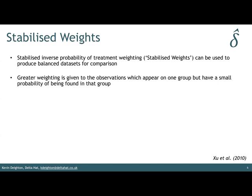The idea with stabilized weights is that greater weighting is given to observations which appear in one group that have a small probability of being found in that group. It's effectively taking the patients in the sample that are less well represented and increasing their weight — almost increasing the sample size of patients that are missing or where there should be more in that dataset. The idea is that this will then give a stronger distribution to make the datasets more balanced for the analysis.